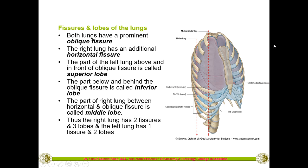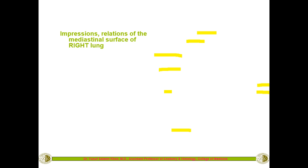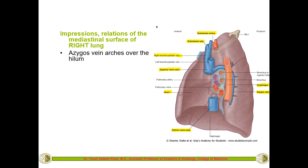The right and left lungs can be differentiated by the number of fissures — one on the left, two on the right — and the number of lobes — two on the left, three on the right. The impressions on the mediastinal surface also differ between sides. In an examination you should be able to differentiate structures giving impressions on the mediastinal surface of the right versus the left lung.